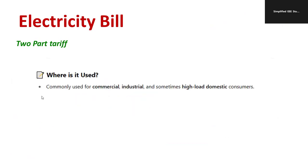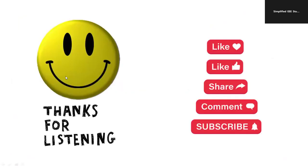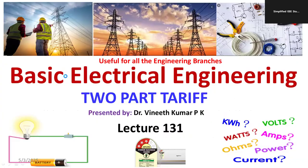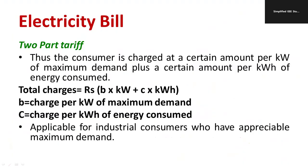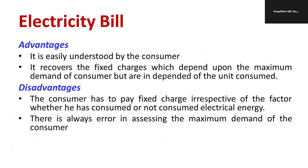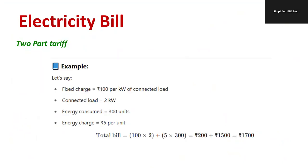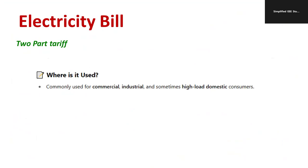Two-part tariff is mainly applicable for industry and commercial load, where the load is higher compared to domestic load. To summarize, we discussed what is meant by an electricity bill, the major components of an electricity bill, what is two-part tariff, its importance, where it is used, and how to compute the total bill. It is mainly used for commercial and industrial purposes.